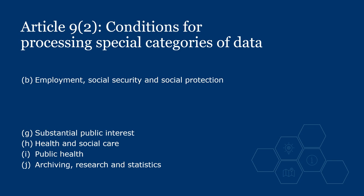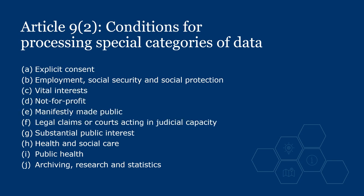The first group is A and C to F. These conditions are all complete as they stand in the UK GDPR. The second group is B and G to J. These conditions refer to processing authorised by or on the basis of UK law, which means that for these conditions we have to go to the DPA to find that authorisation or basis in UK law.